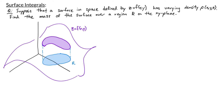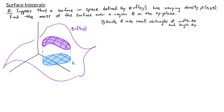We can figure out how to do this by setting up a Riemann sum. First I'm going to take my region R and divide it into small rectangles, each of width delta x and length delta y. For each of these small rectangles, I'm going to approximate the mass of the surface above it.